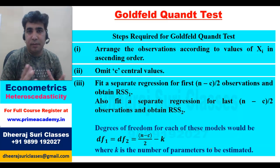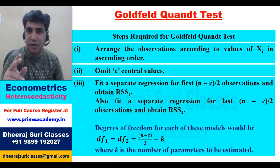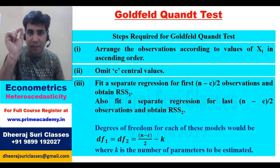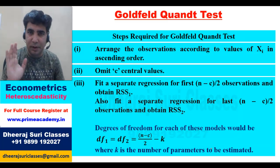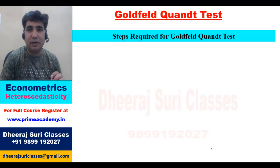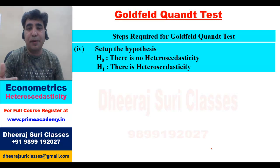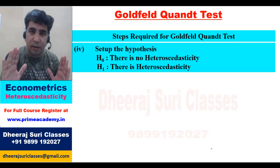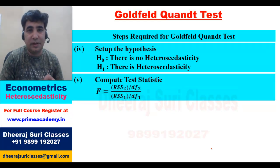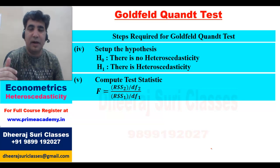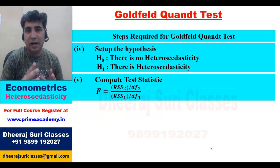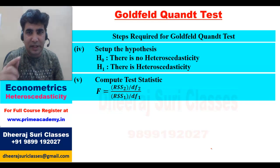The degrees of freedom are sample size minus number of parameters, i.e., N−K. For the upper part, the sample size is (N−C)/2, so degrees of freedom = (N−C)/2 − K. The same applies to the lower part. Because DF2 and DF1 are always equal, they will cancel out in the F-ratio.